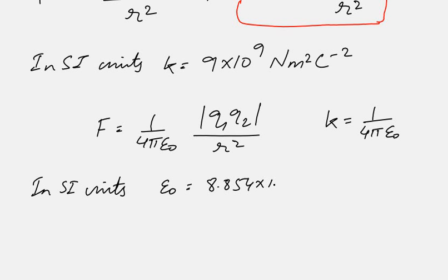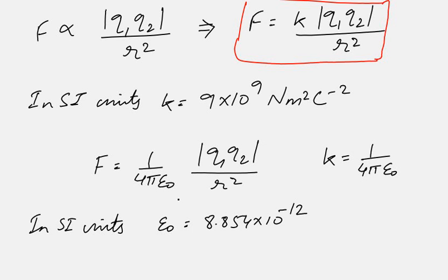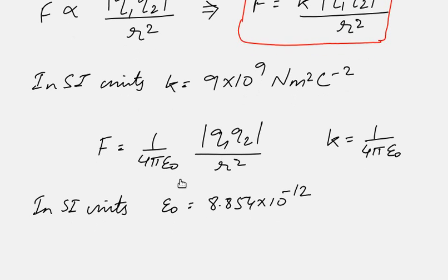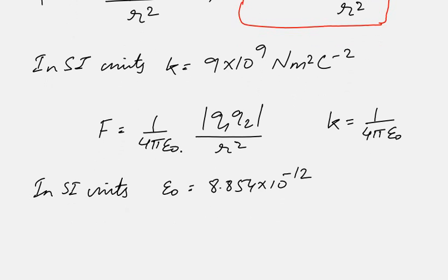ε₀ is another constant in SI units; its value is 8.854 × 10⁻¹². Since 4π is dimensionless, and ε₀ has moved from numerator to denominator compared to k, the units of ε₀ are simply the inverse of the units of k: coulomb squared meter minus two newton minus one.